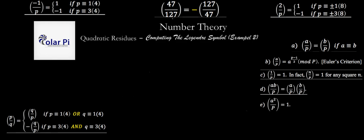To start, notice that both 47 and 127 are primes. In addition, both 47 and 127 are congruent to 3 mod 4.